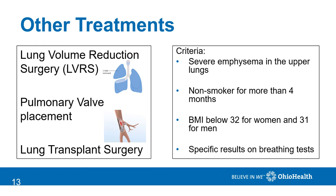There are surgical treatments for COPD. Lung volume reduction surgery, or LVRS, involves removing the upper portion of the lungs from the body so the lower section can expand and fill the space. Pulmonary valves can also be placed to divert air away from the most diseased portion of the lungs and send it to the healthier portion. Or a lung transplant, where your lungs are removed and replaced with a donor's lungs. There is very specific criteria for each of these procedures, based on PFTs, age, weight, the severity of your emphysema, and location. You must be a non-smoker for more than four months to be considered.